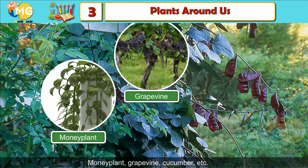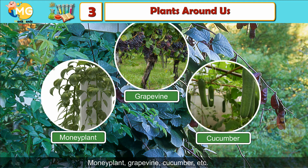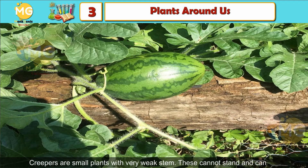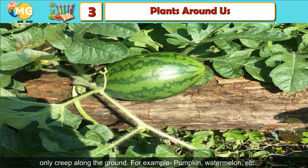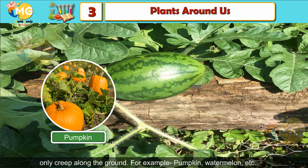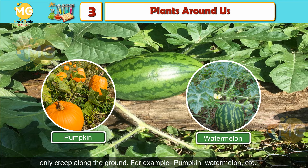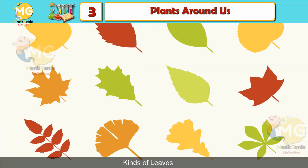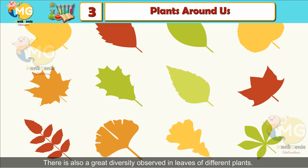Creepers are small plants with a very weak stem. They cannot stand and can only creep along the ground. For example, pumpkin, watermelon, etc. There is also a great diversity observed in the leaves of different plants.